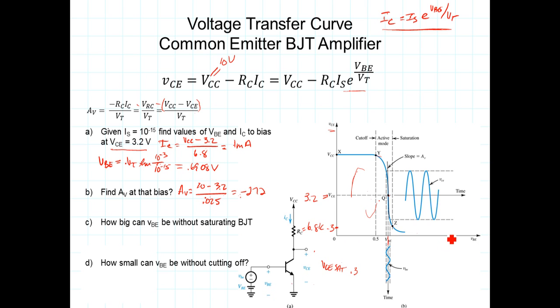We can calculate the current flowing through here when VCE is equal to 0.3 volts. I sub C would be equal to VCC, which is 10 volts, minus the volts at the collector, 0.3 volts, divided by the 6.8 kiloohms. That gives us 1.617 milliamps. So our bias current was 1 milliamp; at the border going into the saturation region, I sub C is equal to 1.617 milliamps.